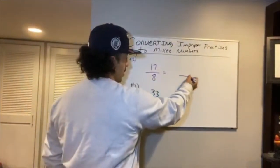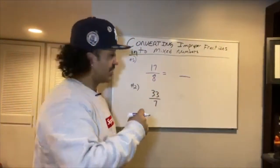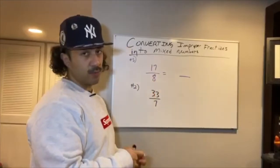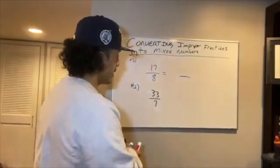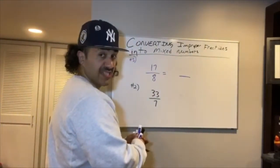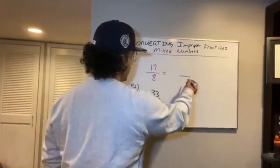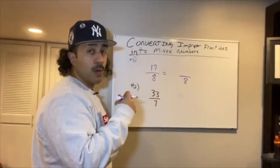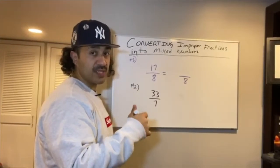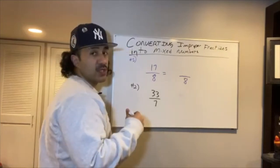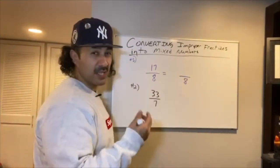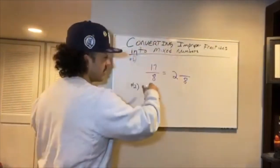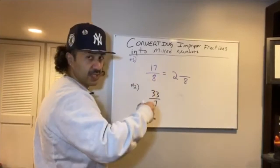When converting, the denominator of our mixed number is going to be whatever the denominator is of our improper fraction. In this instance, we have a denominator of 8, so we're going to keep that denominator as 8. How many times does 8 go into 17? What is 17 divided by 8? Using the 8 times table: 8 times 1 is 8, 8 times 2 is 16, 8 times 3 is 24 — that goes beyond 17. So we write the whole number 2, which is the number of times 8 goes into 17 without going over.